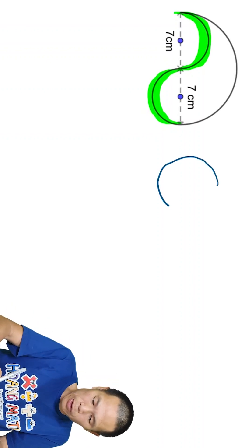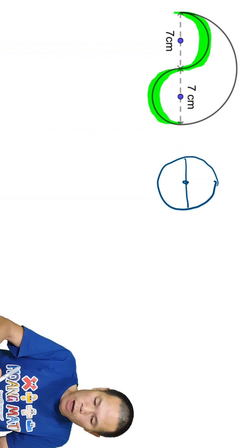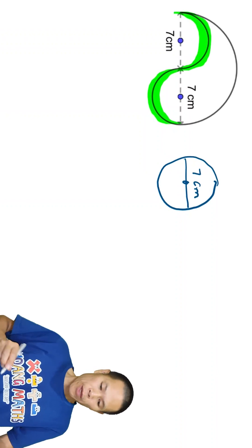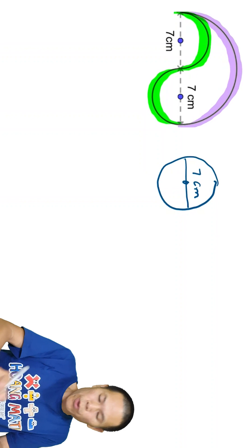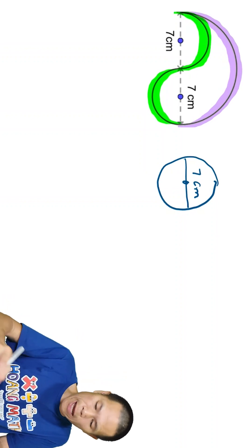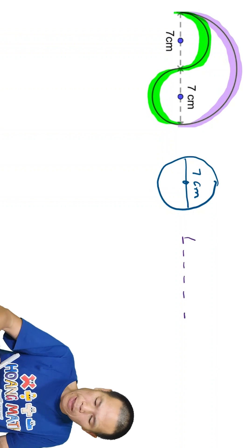So let me draw it out. So this is a circle with a diameter of 7 centimeters. Like that. Then we have a semicircle here, half of a circle with the radius of 7. Let me just draw it out. So we have a semicircle here.